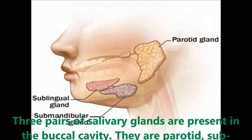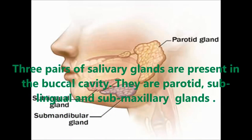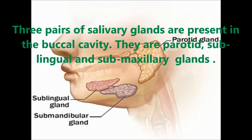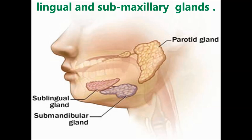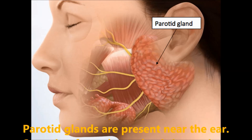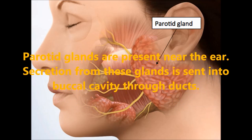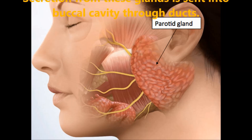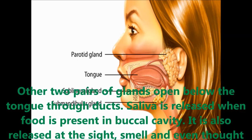There are three pairs of salivary glands present in our buccal cavity. They are called parotid, sublingual and submaxillary glands. The parotid glands are present near the ear and they secrete into the buccal cavity through ducts. The other two pairs of glands open below the tongue through ducts.